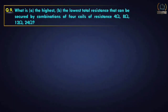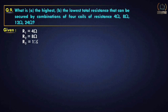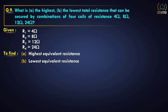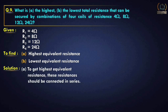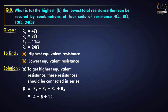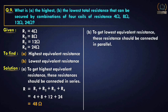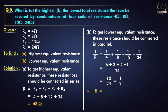Question number nine: what is the highest and lowest total resistance from combinations of four coils of resistance 4 ohm, 8 ohm, 12 ohm, and 24 ohm? To get the highest equivalent resistance, connect all four in series: R = 4 + 8 + 12 + 24 = 48 ohm. To get the lowest, connect all four in parallel, giving R = 2 ohm.